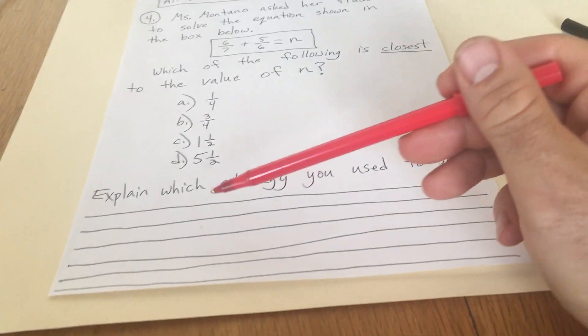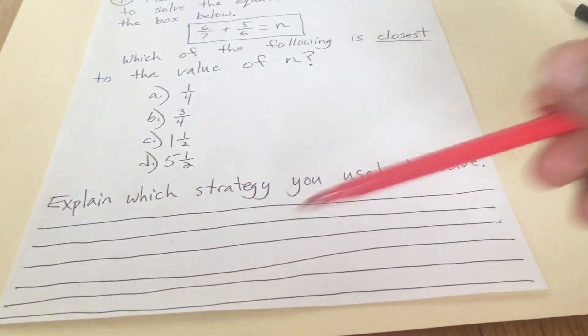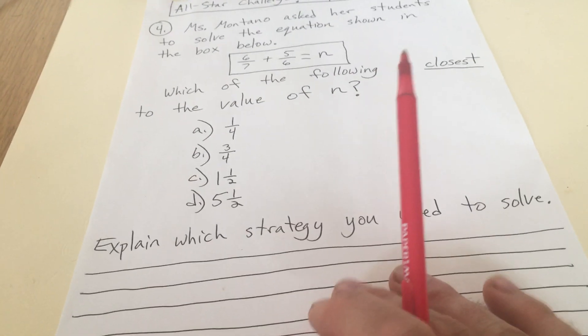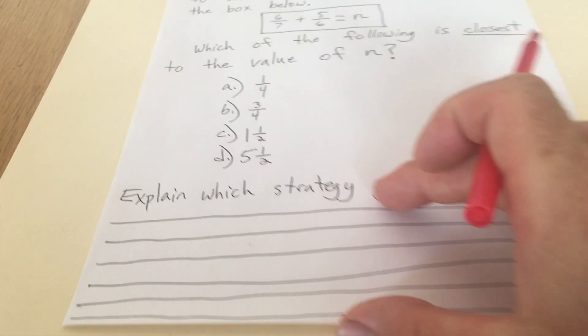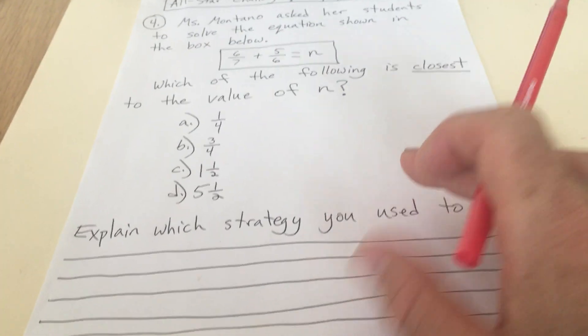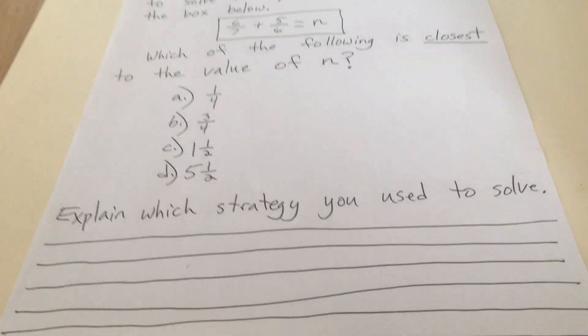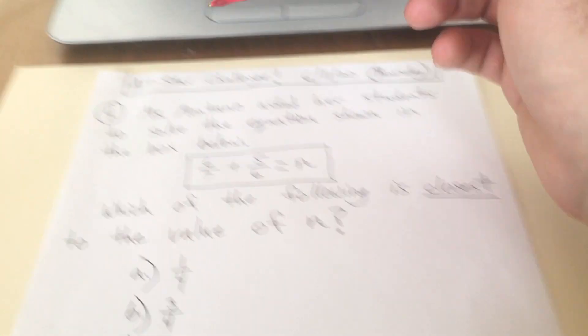I'm going to have to see what you put as you explain the strategy that you use. So if you did not do the writing part, that part is very important for this. If you don't do well on that, you're not going to get full credit for this problem. So it's very important to explain what strategy you use to solve it.